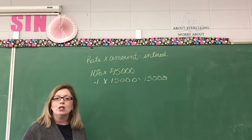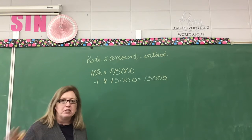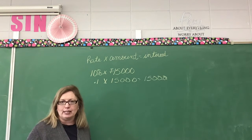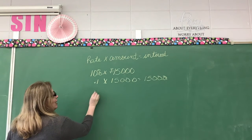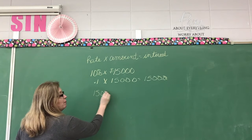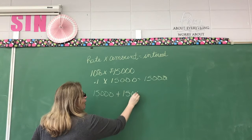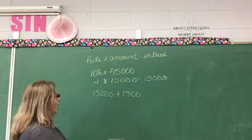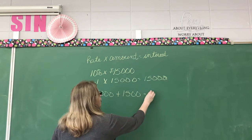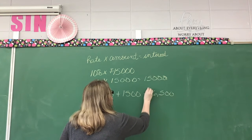That is what we call simple interest — he's paid that money one time, it's his money. So how much money does he have now? He has the $15,000 that he put in plus the $1,500 that he earned in interest. Adding these together, he's going to have $16,500.